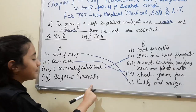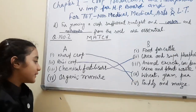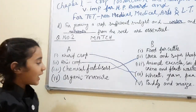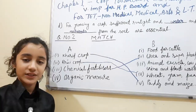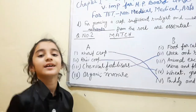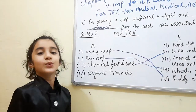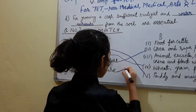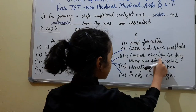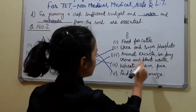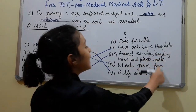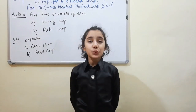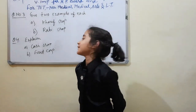Next, organic manure. What will match with organic manure? I'll give you 3 seconds. Your time starts now. 1, 2, 3. Your time is up. The correct answer to it is: animal excreta, cow dung, urine, and plant waste. Let's move on to question number 4.